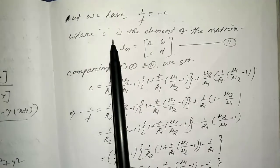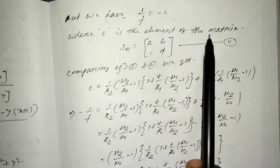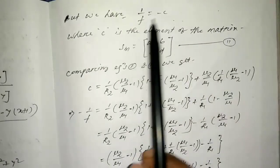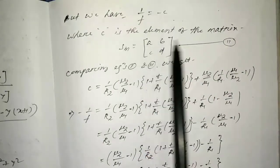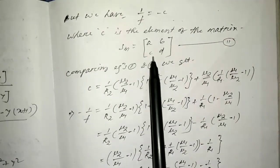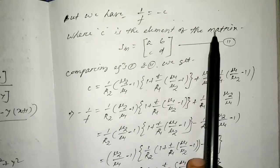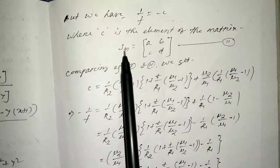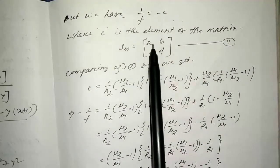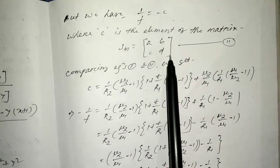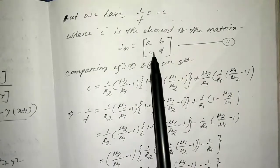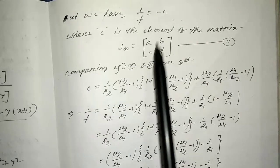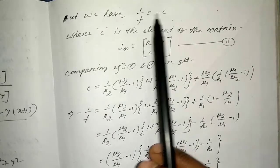It is the element C of the system matrix. The system matrix SM equals ABCD, where C is the element that equals minus 1/F — that is equation 2.